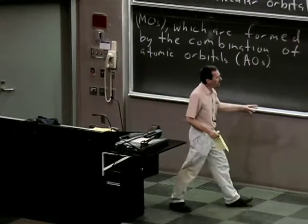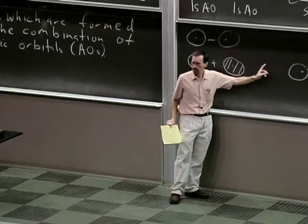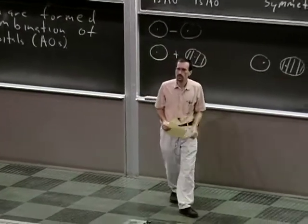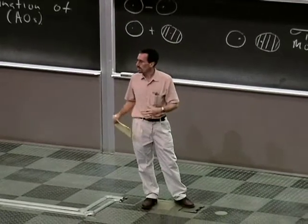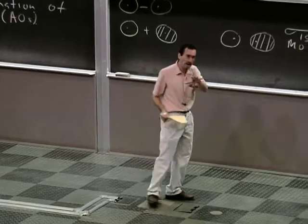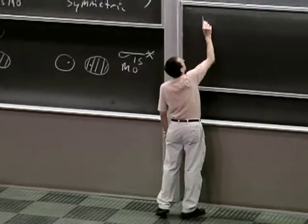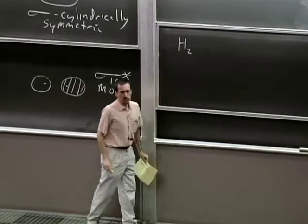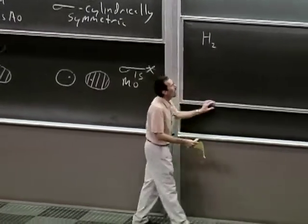Whenever you combine two atomic orbitals, you get a bonding orbital and an anti-bonding molecular orbital. Normally we can and often do forget about the anti-bonding molecular orbitals. Let's see why we can often ignore them. Here's an orbital energy diagram of the molecule hydrogen, with energy on the y-axis.